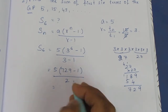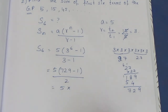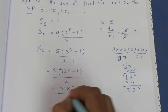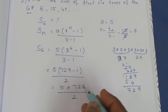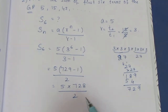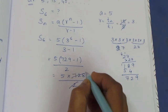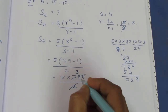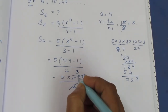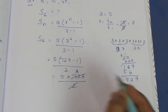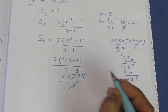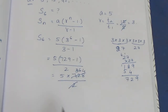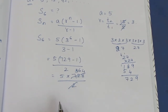So we have 5 × 728 / 2. We can cancel: 728 divided by 2 equals 364. Now we multiply 5 × 364.